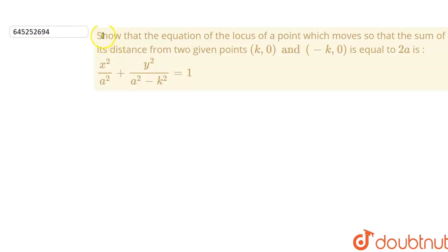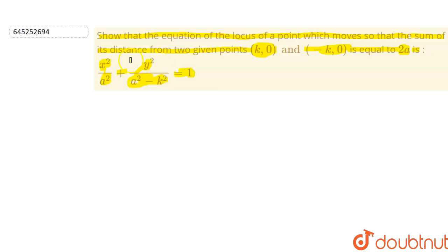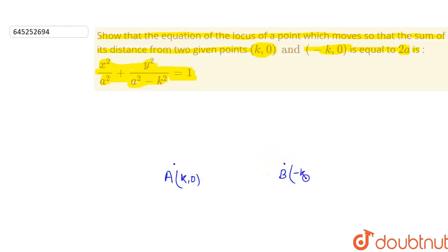Hello students. In this question we have to show that the equation of the locus of a point which moves so that the sum of its distances from two points k,0 and -k,0 is equal to 2a. We have two points: let's say A which is (k,0) and B which is (-k,0).